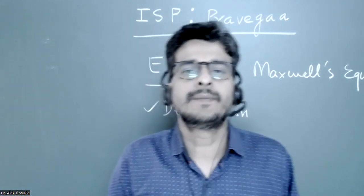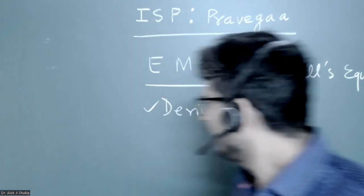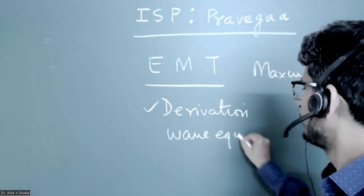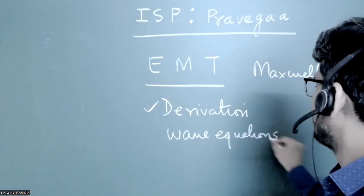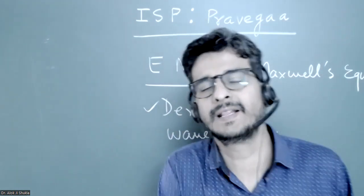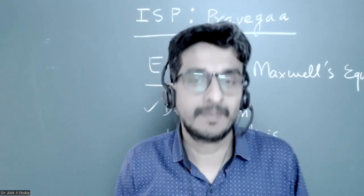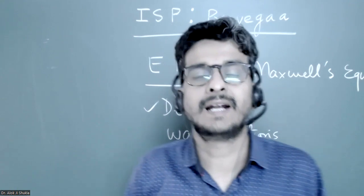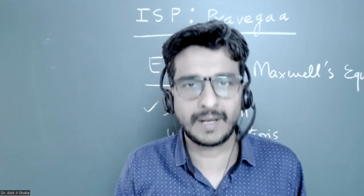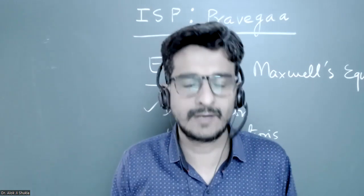Then come the wave equations — the derivations of wave equations from Maxwell's equations — in the form of electric field and in the form of magnetic field. Just see how Maxwell established that the electromagnetic wave is light, or light is an electromagnetic wave, which propagates with velocity C in vacuum.